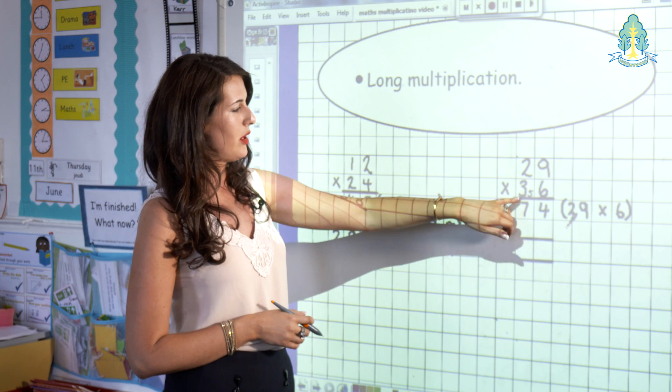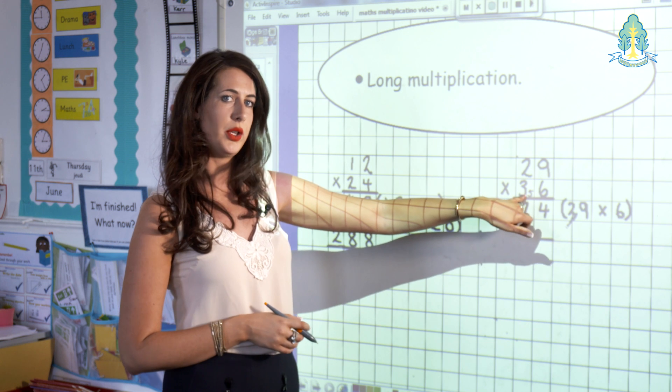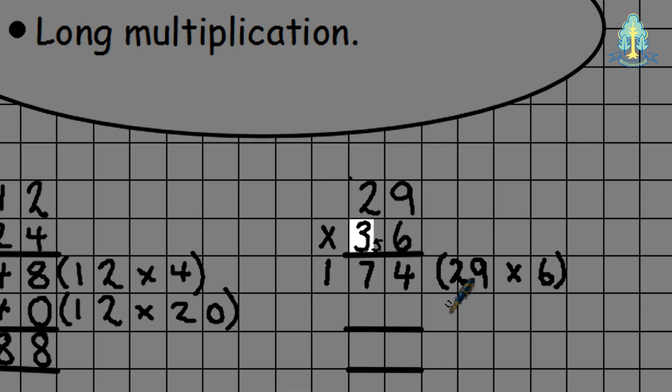We then now move down to our 3 in our tens column, but we know it's not 3—it's in our tens, so we know this is 30. So we're now looking at 29 multiplied by 30. As previously explained, when multiplying by a multiple of 10, we place the 0 in our units column. And we now simply multiply 29 by 3. So 3 times 9 is 27. We put our 7 down and carry our 2. We've then got 3 times 2, which is 6, and adding on our 2 gives me 8.